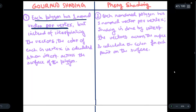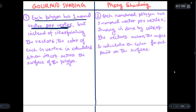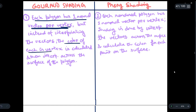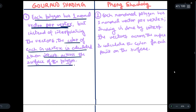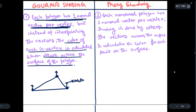Let us see what Gouraud shading is first. Suppose we have a polygon — a polygon has one normal vector per vertex. But instead of interpolating the vectors, the color of each vertex is calculated and then interpolated across the surface of the region. So suppose we have a polygon with vertices, and we draw a normal vector at each vertex.